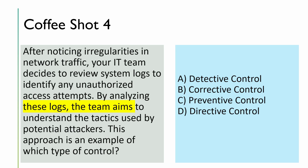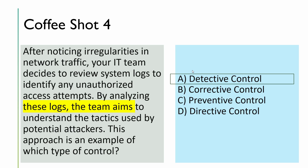After noticing irregularities in network traffic, your IT team decides to review system logs to identify unauthorized access attempts. By analyzing these logs, the team aims to understand the tactics used by the potential attacker. What type of control is this? Firewall logs, IDS logs, and SIEM help you discover the tactics used by an attacker — that is detective control. Corrective reduces impact; preventive comes before the incident; directive gives instructions. The correct answer is A — detective control.